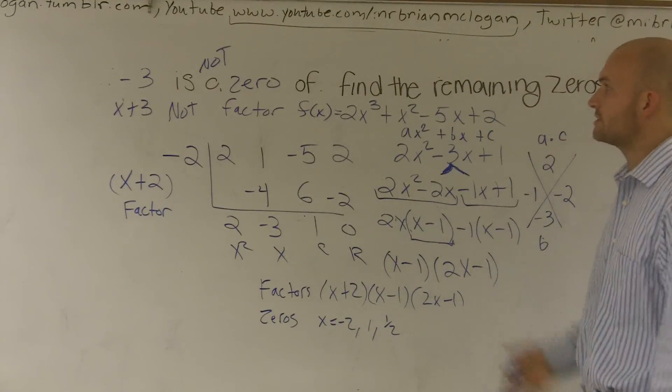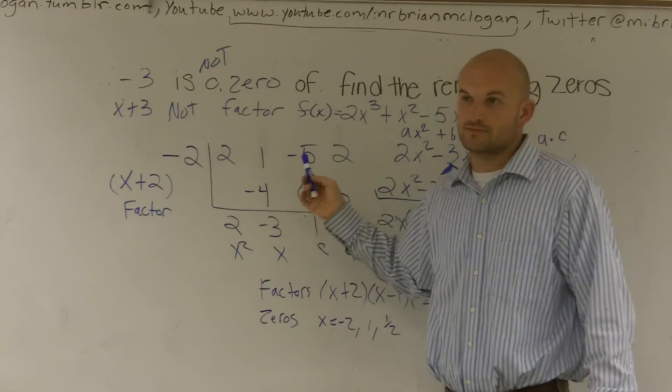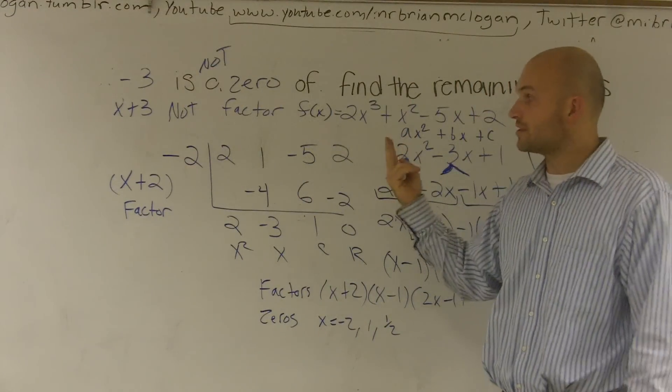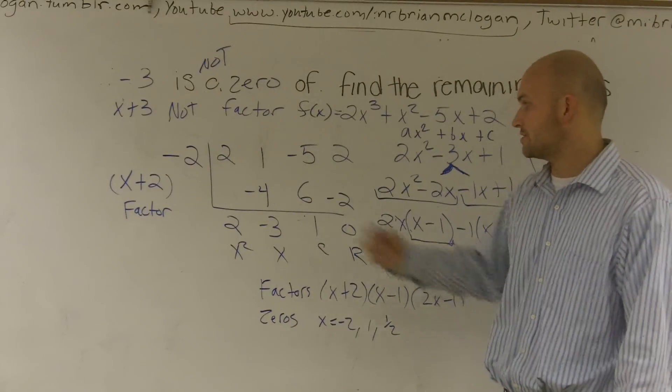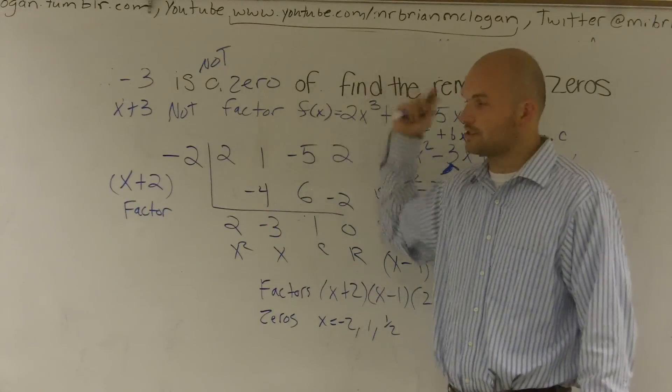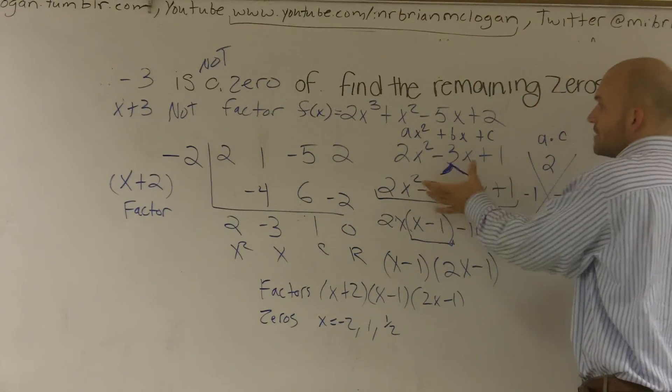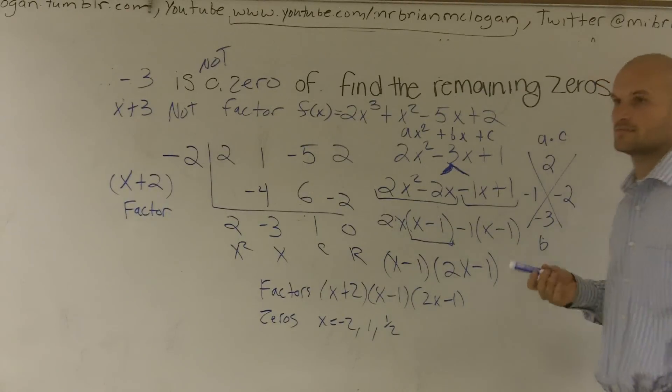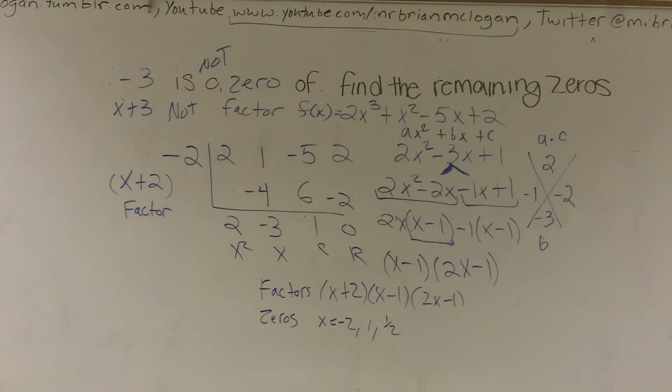So the main kind of moral of the story is you figure out, you find what your zero is, and then you just use synthetic division. If you're given two zeros, you're probably going to want to do synthetic division again. So you get whatever your quotient is, and then use the other zero to do synthetic division again. But this one, we only had one, and plus once we got a trinomial, we could factor it. So I know you don't like factoring, but that's it.